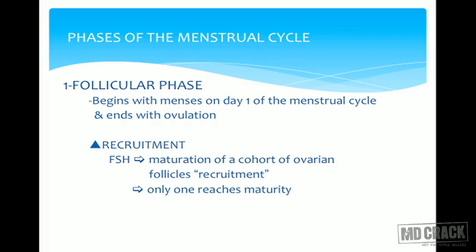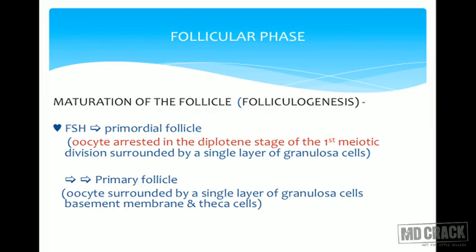The follicular phase begins with menses on day one of the menstrual cycle and ends with ovulation. There is recruitment of a dominant follicle from the cohort once FSH is secreted. FSH leads to maturation of the ovarian cohort follicle, and only the follicle that reaches maturity gets recruited.